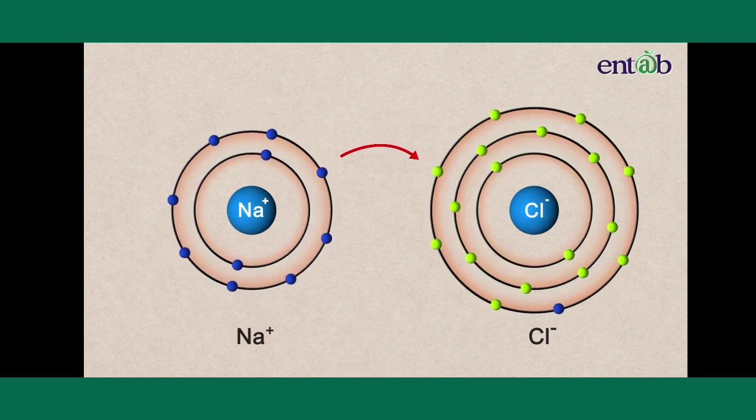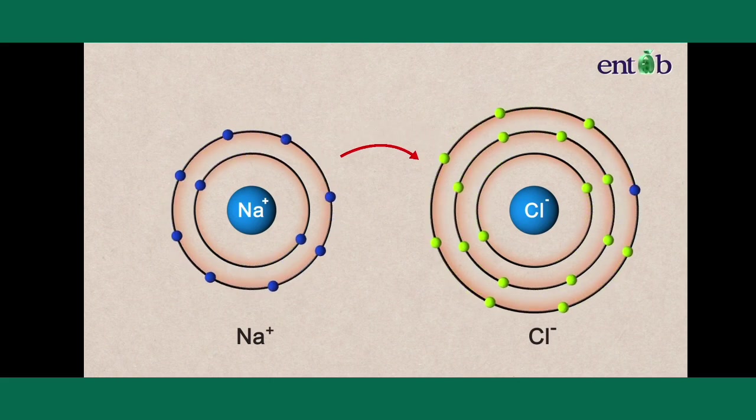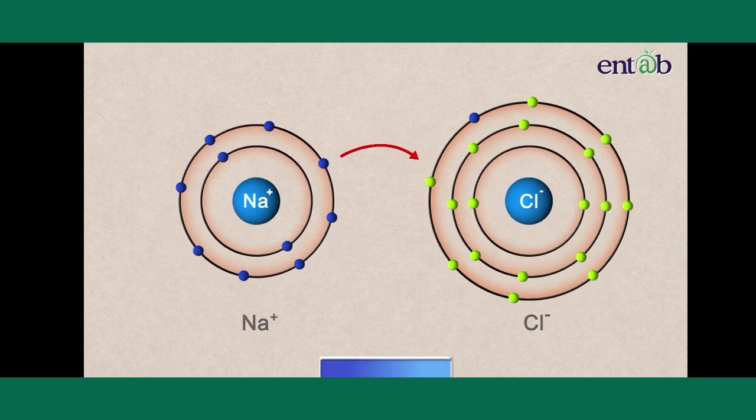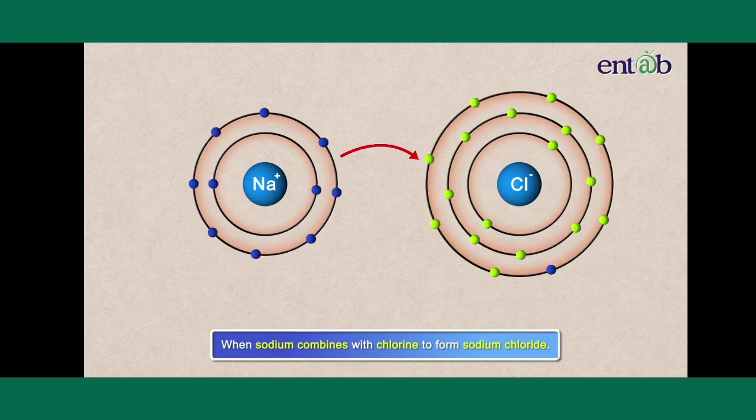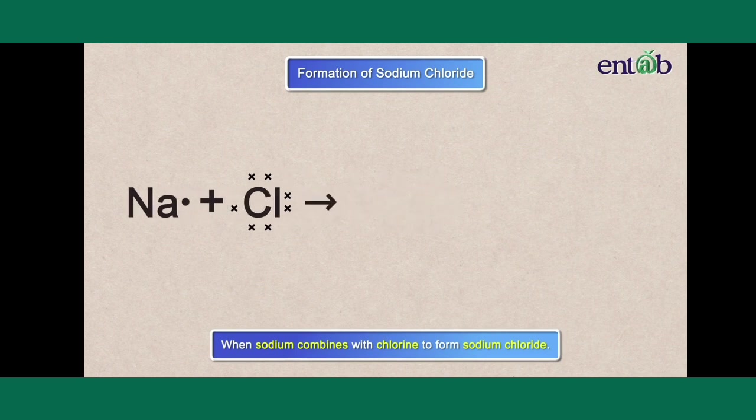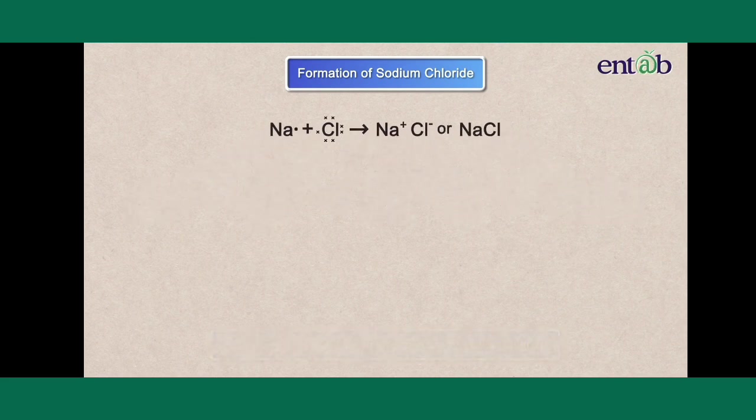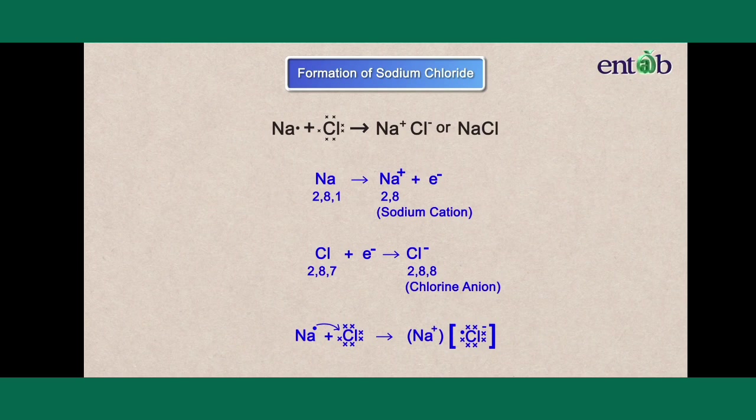Look carefully, the arrow is pointing towards chlorine, showing the movement of the electron. Thus, when sodium combines with chlorine, we get Na• + Cl••••••• → Na+ Cl- or NaCl. It is very important to know how to depict the steps of the formation of an ionic bond between a metal and a non-metal.